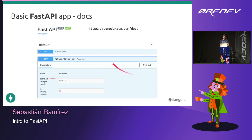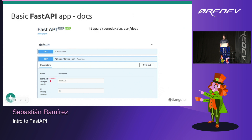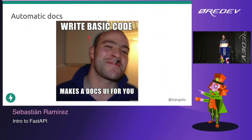With FastAPI, because it's based on these standards, when you write that code and go to slash docs, you get automatic API documentation by default. You can see the root path and the path that goes to slash items slash item_id, which is a path parameter. Item_id is shown as an integer and it's required. We also have a query parameter q, which is a string. Because q had a default value of None, it's not required. You just write some basic code and FastAPI makes a docs UI for you automatically.